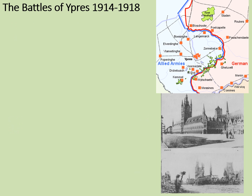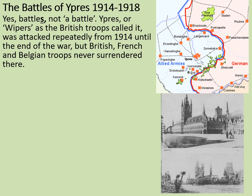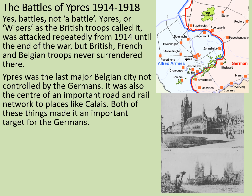The first set of battles — because actually it's not one — relates to the battles of Ypres in Belgium, between 1914 and 1918. Ypres, or 'Wipers' as the British troops called it, was attacked repeatedly from 1914 until the end of the war, but British, French and Belgian troops never surrendered there. Ypres was the last major Belgian city not controlled by the Germans. It was also the centre of an important road and rail network, which helped link it to places like Calais.